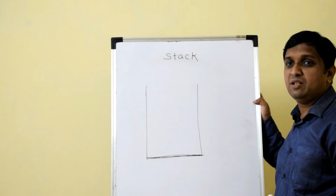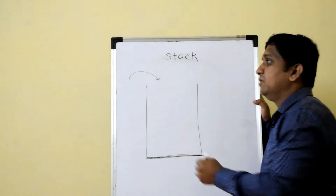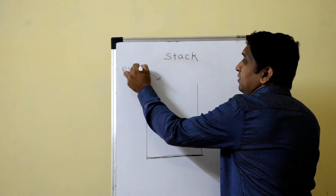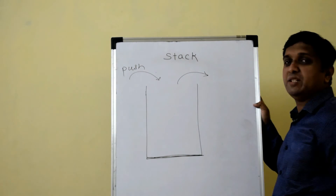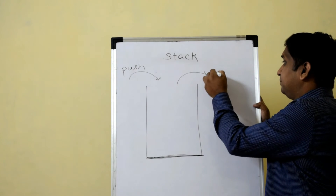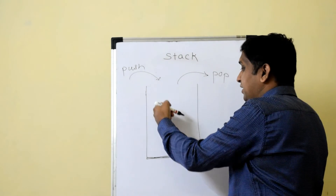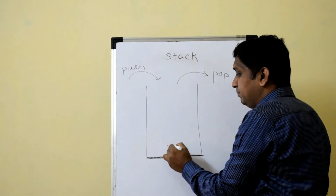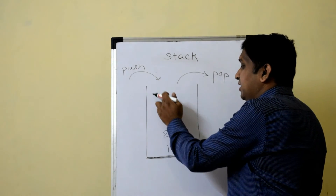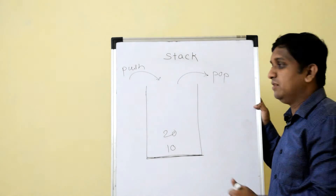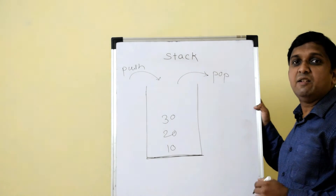The insert operation is called a push operation, and the remove operation is called a pop operation. If I push element 10, it goes in from one end and is stored at the bottom. If I push 20, it is stored on top of 10. The next element is stored on top of 20, and so on.